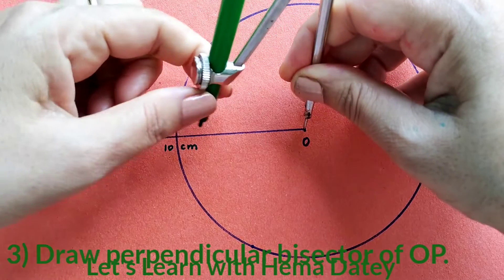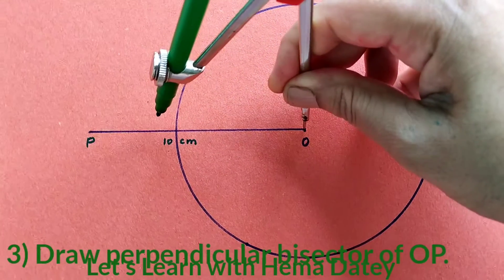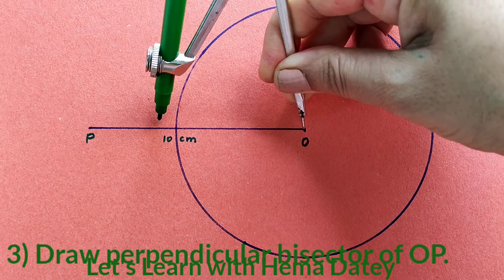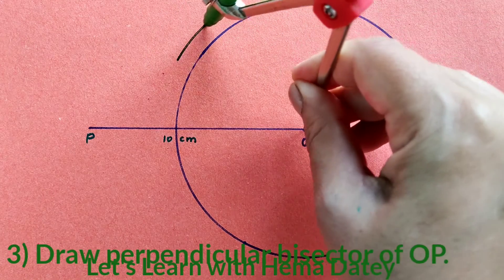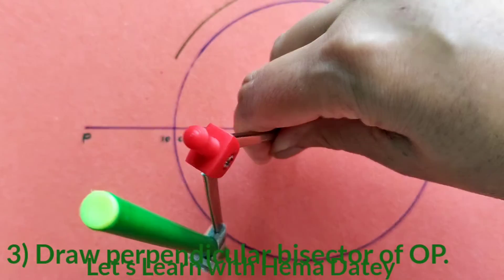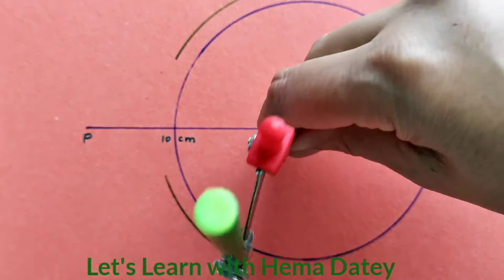So for this we will draw perpendicular bisector of OP. We will take O as a center and radius more than half of OP. We will draw two arcs above and below OP.